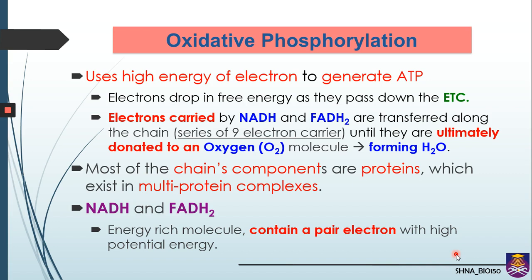OP uses high-energy electrons to generate ATP, where electrons drop free energy as they pass down the ETC. Electrons carried by NADH and FADH2 from previous stages are transferred along the chain until they are ultimately donated to oxygen. As oxygen receives the electron, it is reduced to form water. Most of the chain components are proteins existing in multi-protein complexes. NADH and FADH2 are energy-rich molecules because they contain a pair of electrons with high potential energy.